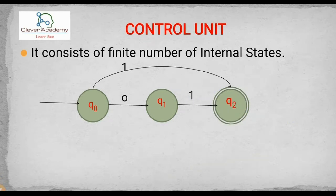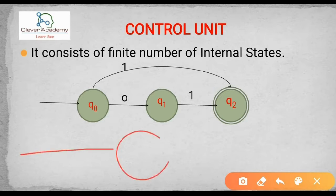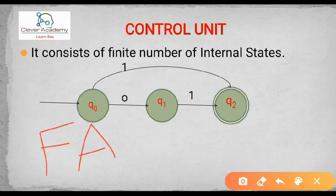When coming to the control unit, the main operations are performed by the control unit — all the execution is done by the control. In finite automata, how do we represent this control unit? Control means whether I can move or I have to stop. It's like a traffic signal: from the traffic signal I had to move onto the road or I had to stop. There is a control at a particular location to stop or to proceed.